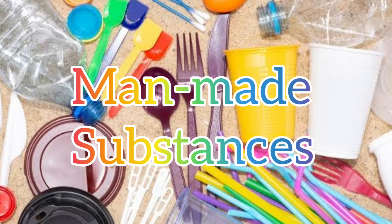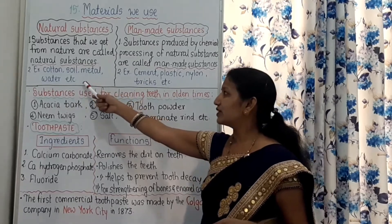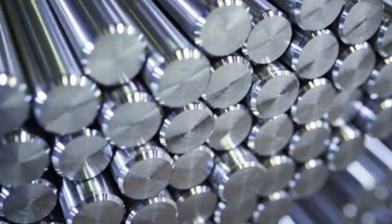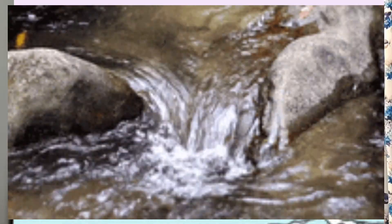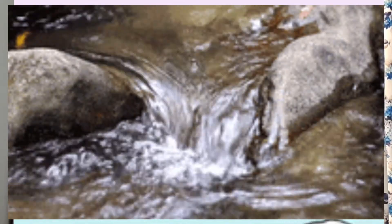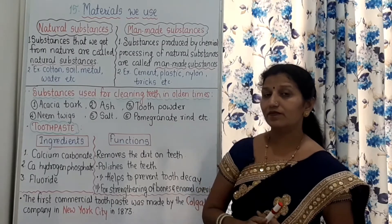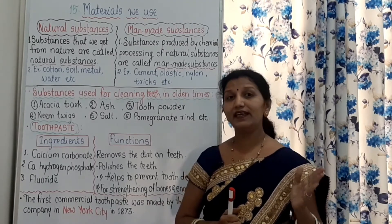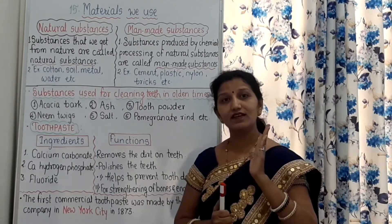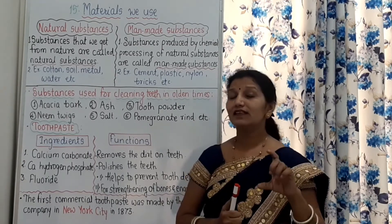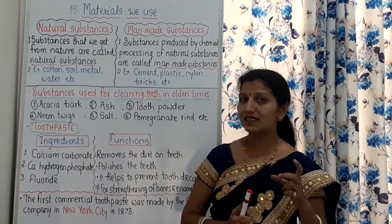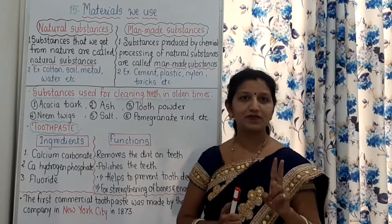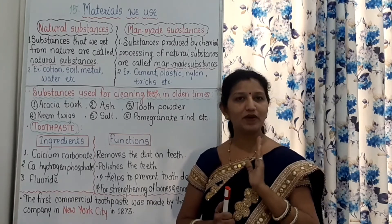Natural substances are cotton, different types of soil, metal, water, etc. And we know, as we studied in 6th standard, that the natural substances are again divided into two main types: biotic and abiotic.